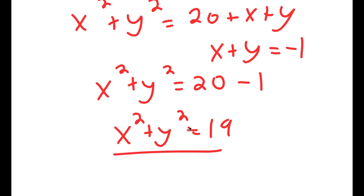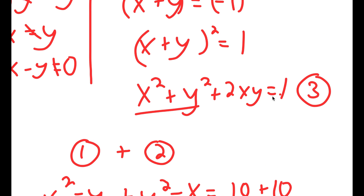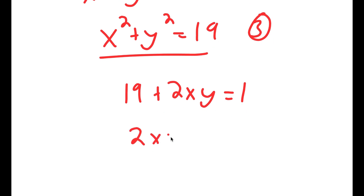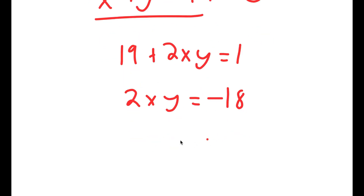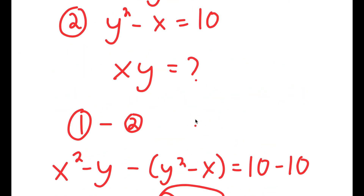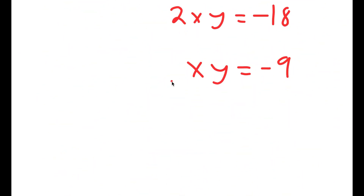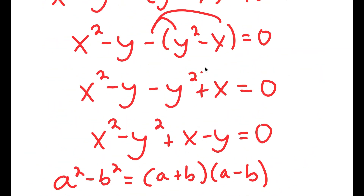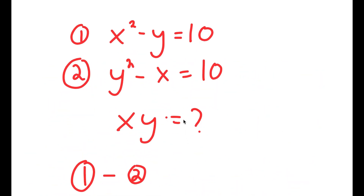Now I substitute into equation 3. We have x squared plus y squared plus 2xy equals 1, and we know x squared plus y squared equals 19. So 19 plus 2xy equals 1, meaning 2xy equals negative 18, and x times y equals negative 9. We were trying to find x times y, and that is negative 9. We didn't actually need to find the individual values of x and y to find their product.